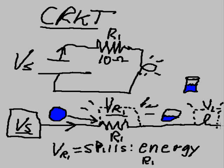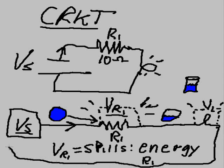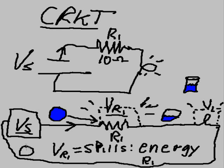Then it goes through the circuit, travels all the way back, and goes right back to the voltage source to get some more energy — because it's all out now. It's on empty. Those electrons are all empty. They are tired. They are empty. No more energy.